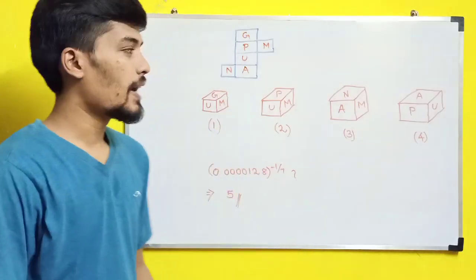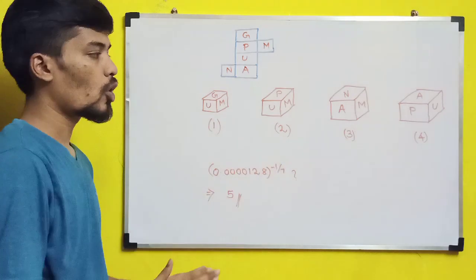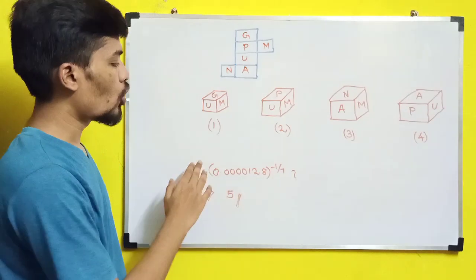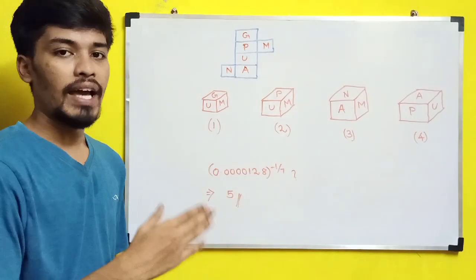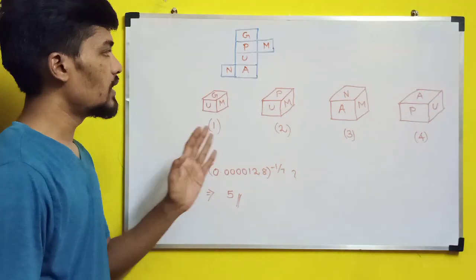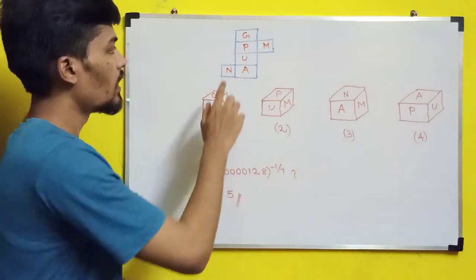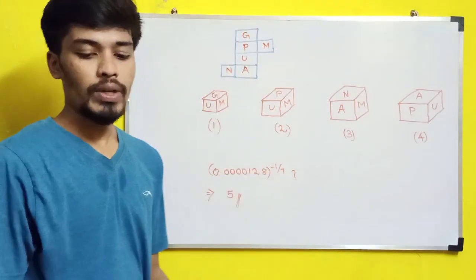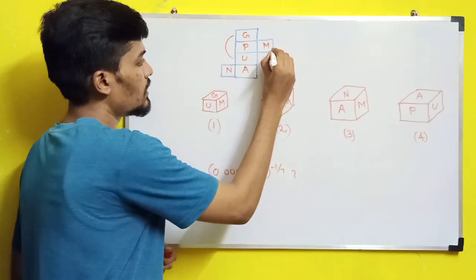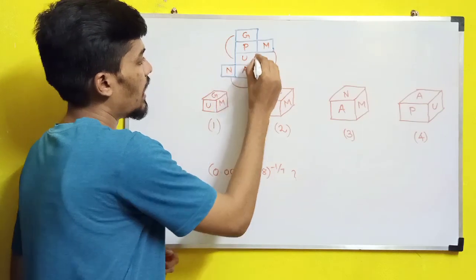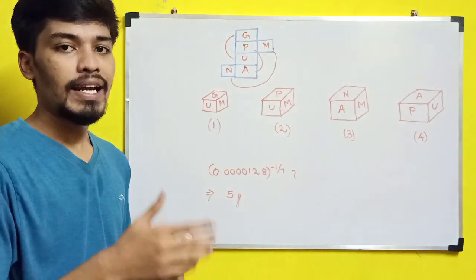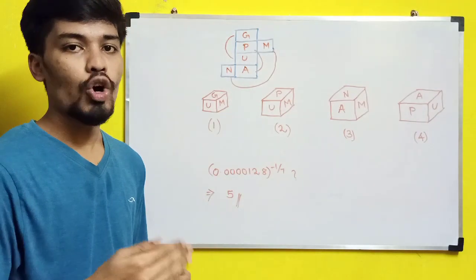The next question gave a dice with four options, asking which options are correct. This is the concept of open dice. The logic is that alternate faces are opposite to each other: g and u are opposite, m and n are opposite, p and a are opposite. From the given options, any option showing opposite faces adjacent to each other is wrong.